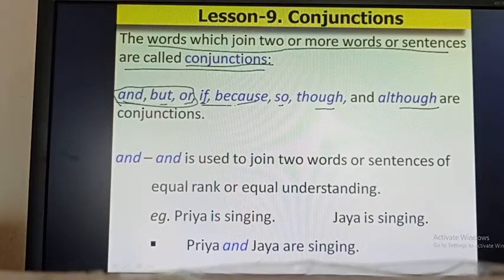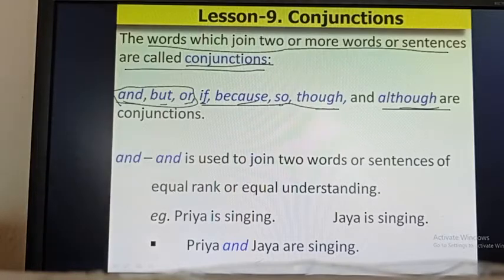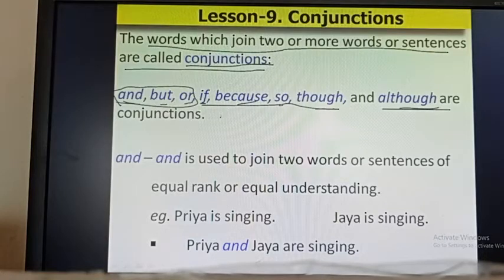The other five I have added: if, because, so, though, and although. These also are conjunctions. There are more conjunctions, but at this stage let us learn only eight. In your book there are only three; I have added another five.